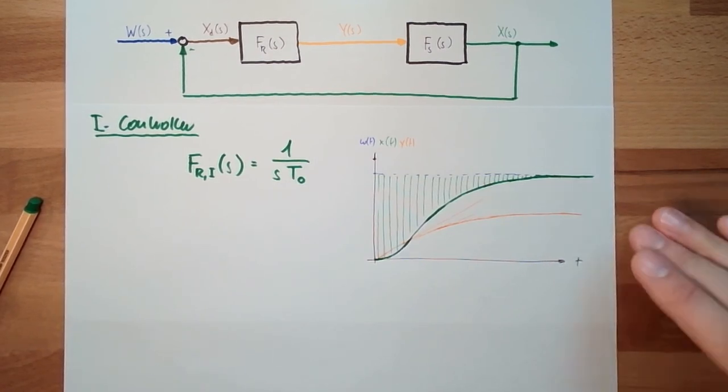And this X from S will look like this, depending on the system of course, but this is how it looks like. This means an I controller does not have any difference left. Difference is gone. That's the upside of an I controller.